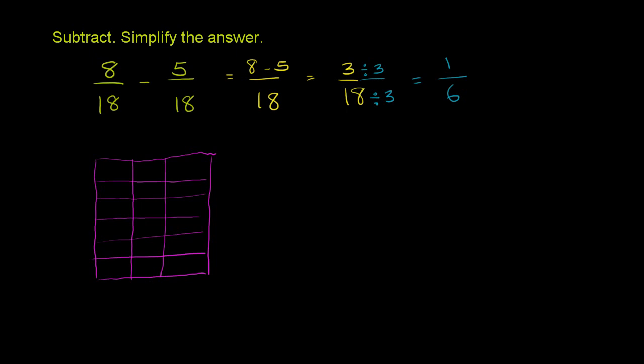Now 8 over 18 is equal to 1, 2, 3, 4, 5, 6, 7, 8. That's 8 over 18. And now we want to subtract 5 of the 18ths. So we subtract 1, 2, 3, 4, 5.